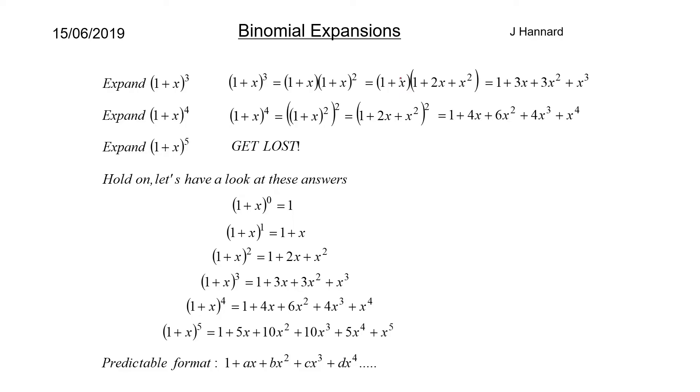So it's a predictable format. We've got 1 plus ax plus bx squared plus cx cubed plus dx to the 4. In these early ones, a equals b equals c equals d which equals 0, and the same for this one. Actually, if you look at the coefficients of these things, it makes a nice little triangle.